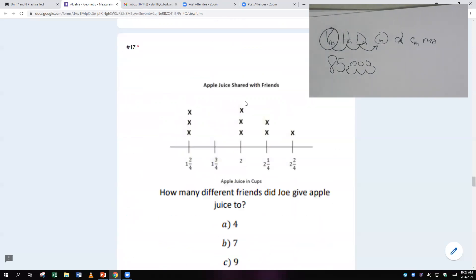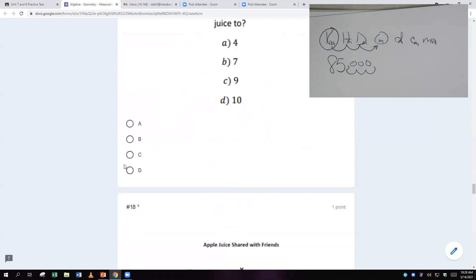Oh, we've got a line plot here. Let's see here. How many different friends did Joe give apples to? Ooh, each X is an apple shared with a friend. So one, two, three, four, five, six, seven, eight, nine. I'm counting nine different apples. C is nine.